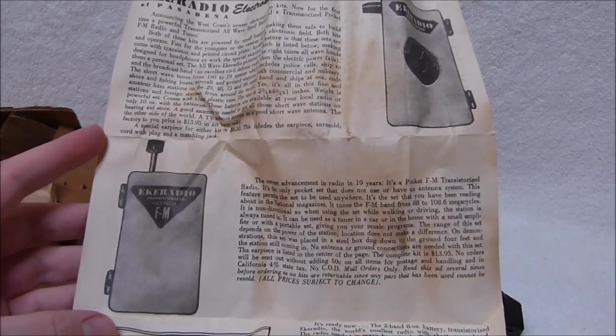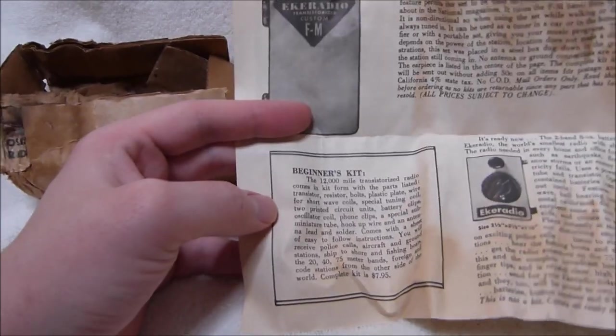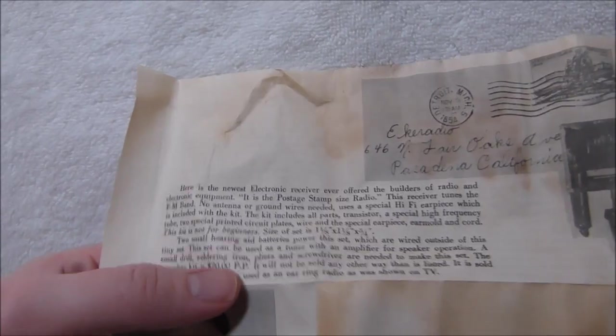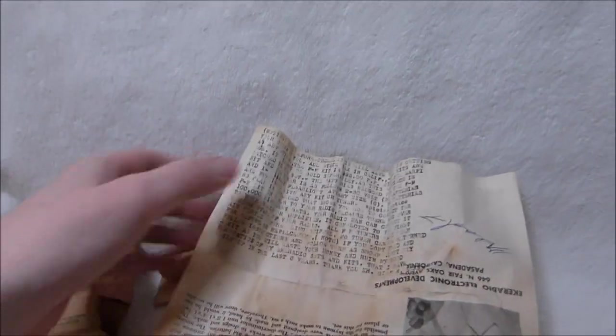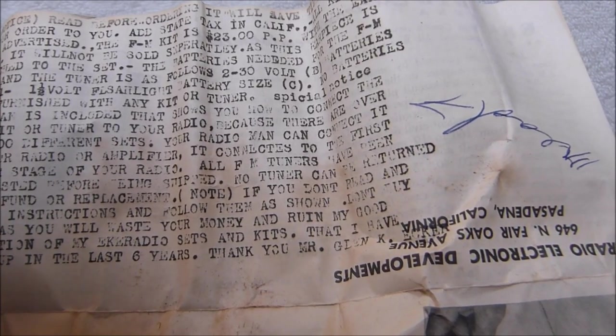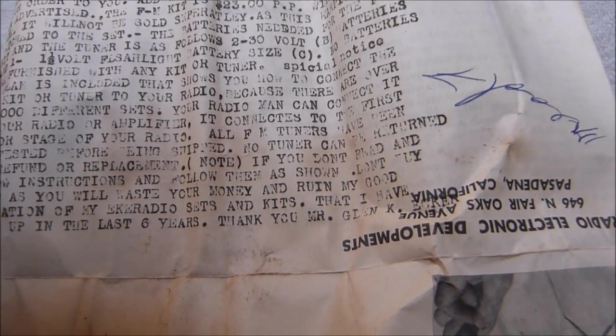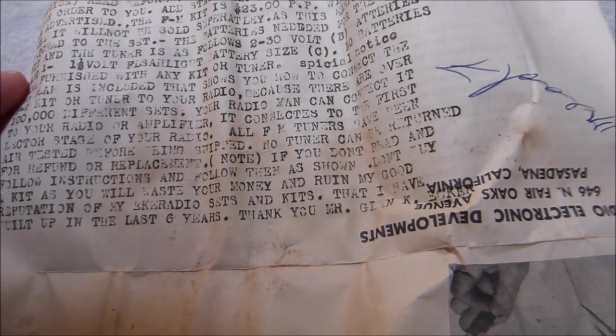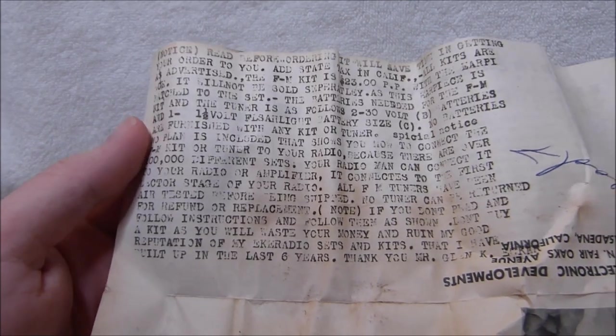All of these kits are extremely rare. It's interesting that this radio here is a hybrid. It uses a tube and a transistor. $20 was a fair chunk of change back then. That's about $200 in today's money. I've never seen that kit before. If you don't read and follow instructions, don't buy a kit as you will waste your money and ruin my good reputation of my Ecker radio sets and kits that I have built up in the last 6 years. Thank you, Mr. Glenn K. He uses punctuation in such an odd way.